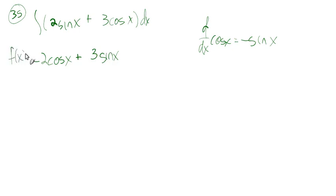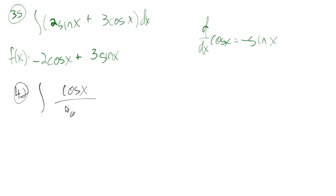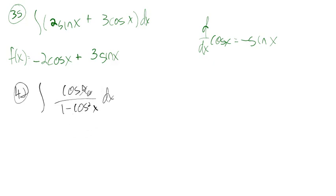That example shows we're going the other direction — taking the antiderivative of given functions. Next, number 42: the antiderivative of cos x over (1 − cos² x), dx. The only way we'd get a quotient from a derivative is from the quotient rule, but to reverse-engineer what two functions were divided to produce this would be quite a task.